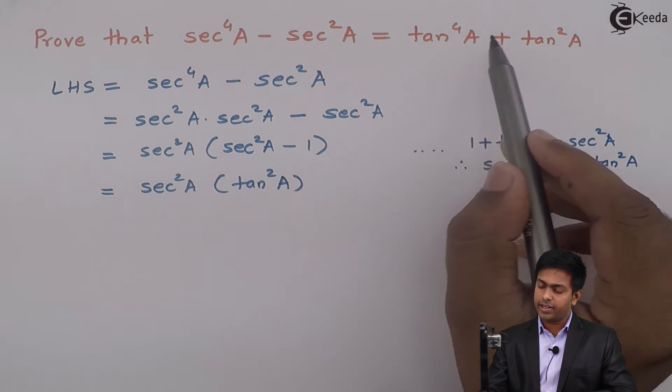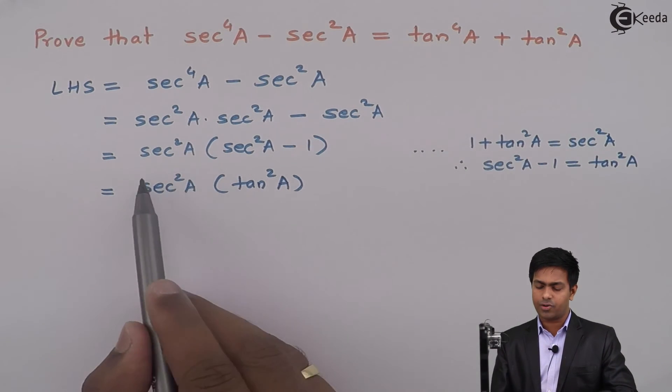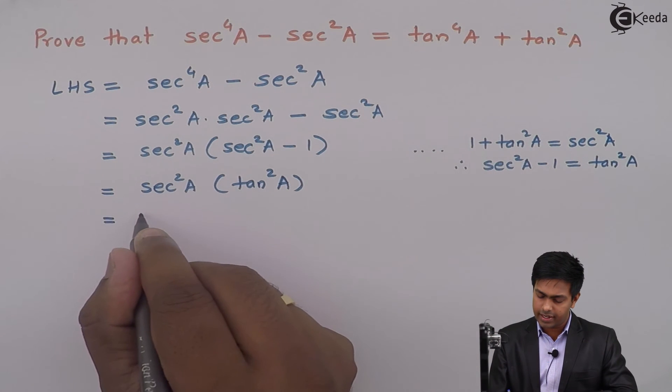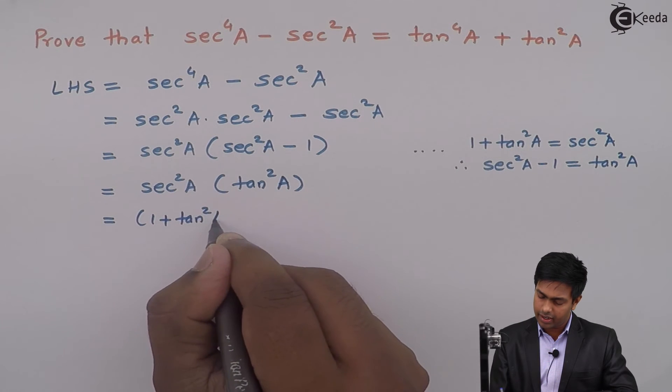So here we will get sec square A into tan square A. But as we want everything in terms of tan, I will convert this sec square A also as 1 plus tan square A.